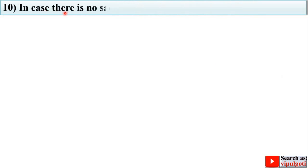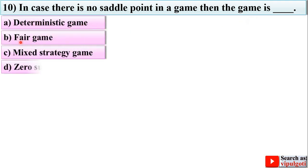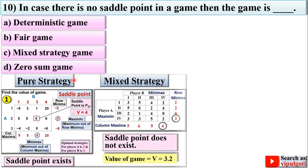Next question: in case there is no saddle point in a game, then the game is — options: deterministic game, fair game, mixed strategy game, or zero sum game. In pure strategy games, a saddle point always exists; in mixed strategy problems, a saddle point does not exist. No saddle point means it is a mixed strategy game, so C is the right answer.